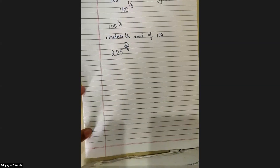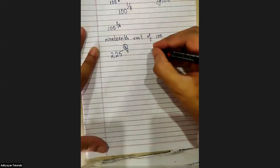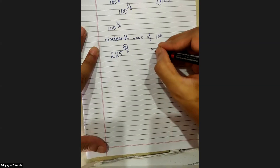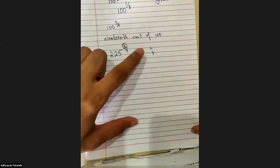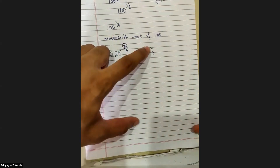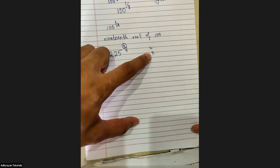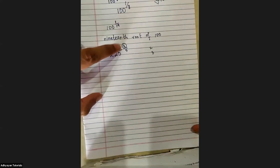Instead of third power, remember — for two we can use the word square and for three we can use the word cube. Two and three have names; four, five, six don't have names so we write them normally. Since power is three here, I can use the word cube. So how do I read it? There are two ways of reading it.